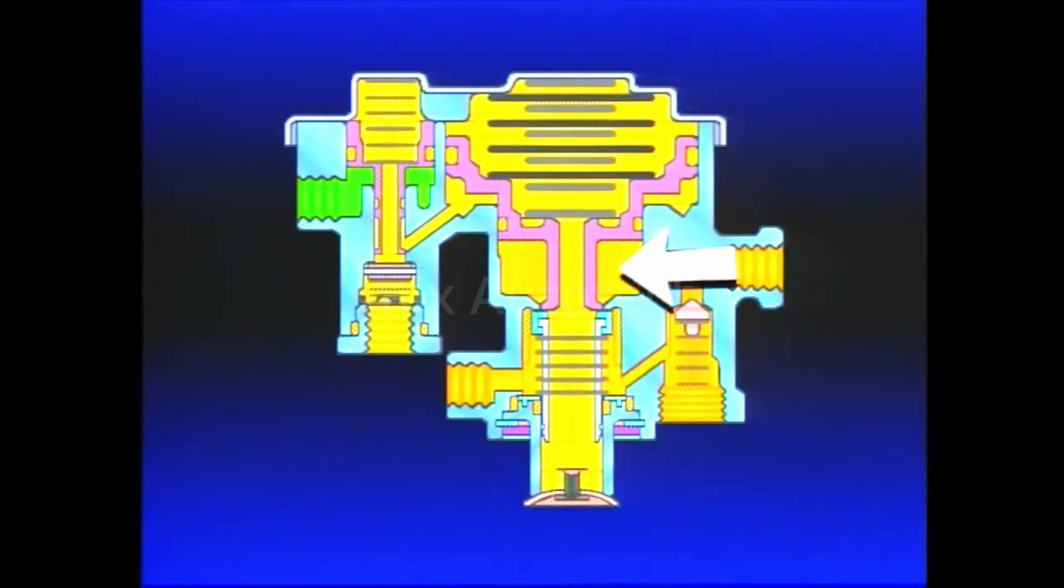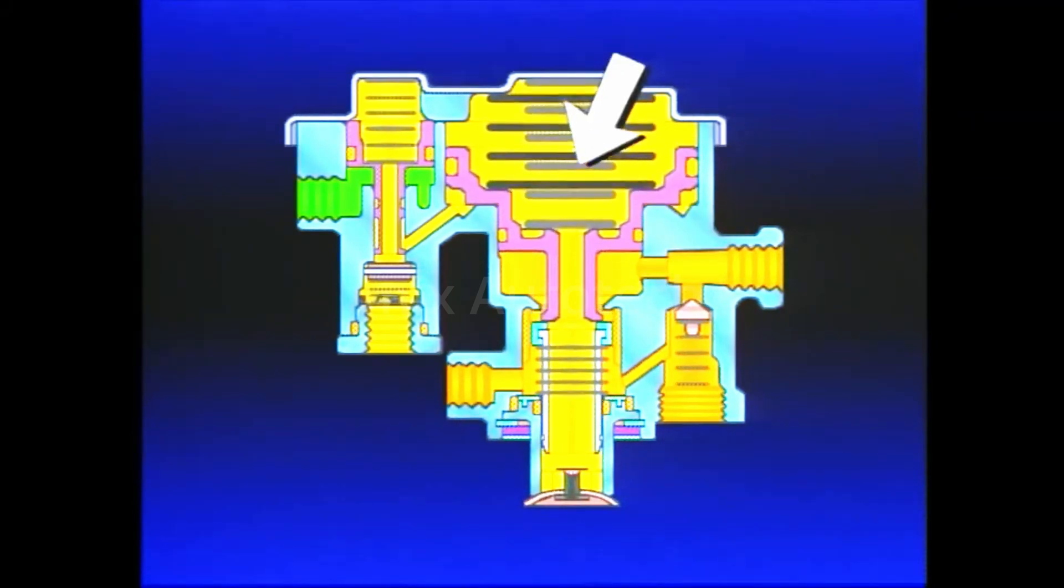Pressure beneath Piston B is then reduced. The springs above Piston B can move the piston down, opening the inlet valve. This enlarges the path for air to return to the PP1 exhaust. When the air is completely exhausted, the vehicle parking brakes are fully applied.